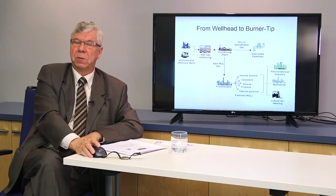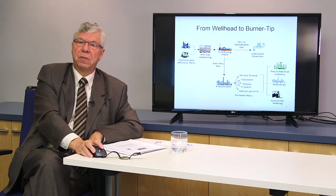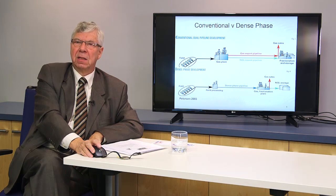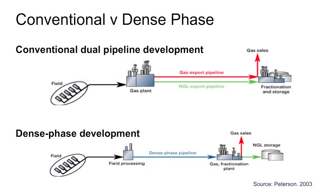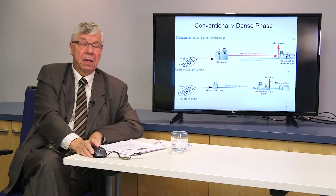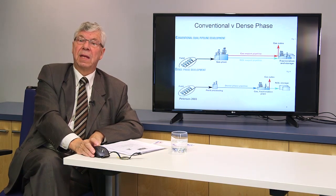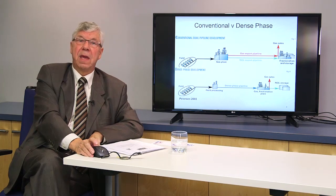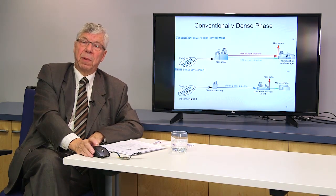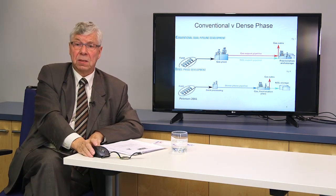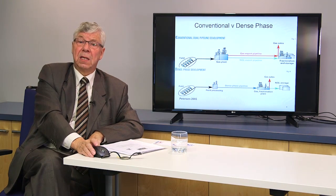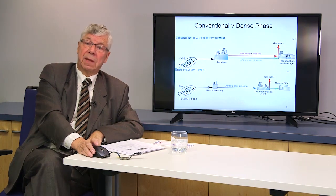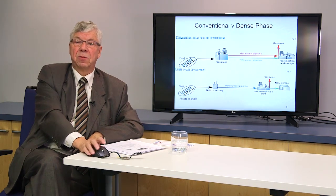That leaves dry or marketable gas, which goes into the transmission, interstate, or interprovincial pipelines. Conventional gas is operated at relatively modest pressures. When there's liquid content in the gas stream, we must operate at much higher pressures — called dense phase. Onshore, it's common to have two pipelines from the gas plant: one conveying gas and one conveying natural gas liquids. Offshore, where platform space is limited, what goes ashore is the well product minus water and sand, requiring dense-phase operation.